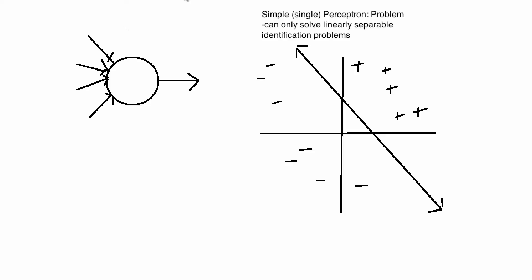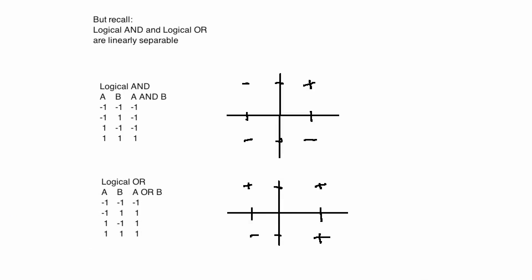Let's consider some things we already know. Logical AND and logical OR are both linearly separable. For example, here's logical AND — implemented with bipolar input and bipolar output. We have a negative, a negative, and a positive, and clearly there's a line that can separate these. I could draw a straight line that puts the positive example on one side and all the negatives on the other.